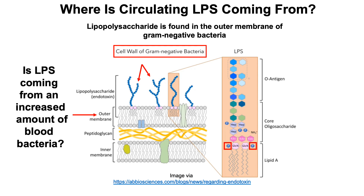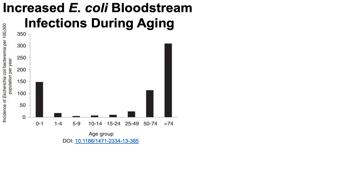When considering that LPS increases during aging and is found in the outer wall of gram-negative bacteria, does that mean the LPS in the blood comes from increased blood bacteria? In part, yes. Looking at the incidence of E. coli bacteremia as a function of age, 74-year-olds or older have about a 10 times higher incidence of E. coli in the blood compared to 25 to 49-year-olds.